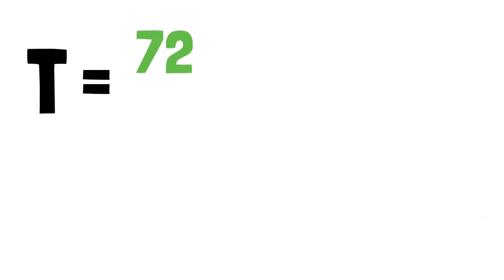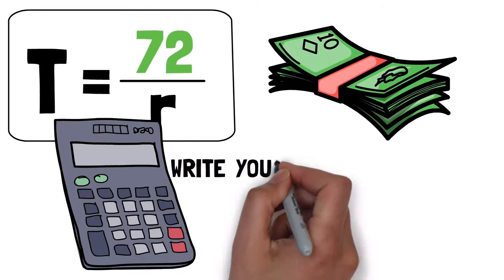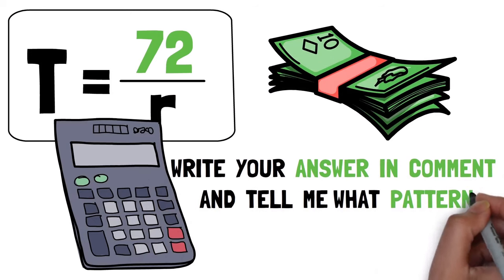Now, using the rule of 72, calculate how long it will take you to see a return on these investments. Write your answers in the comments and tell me what pattern you can see.